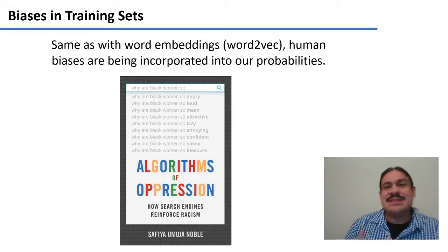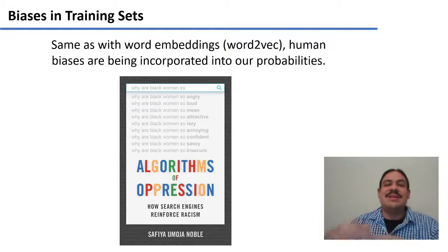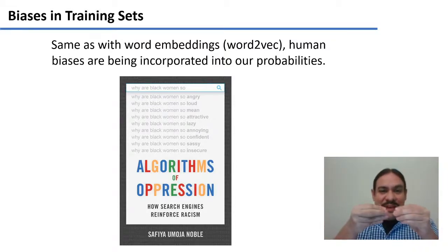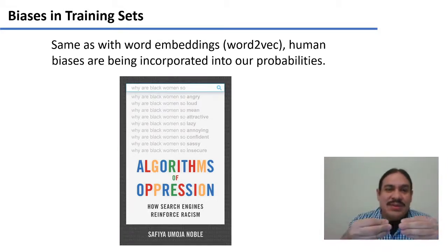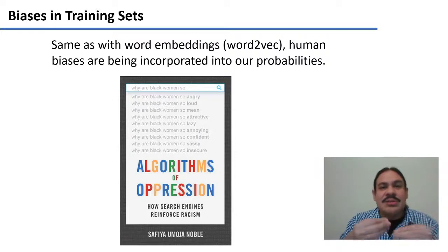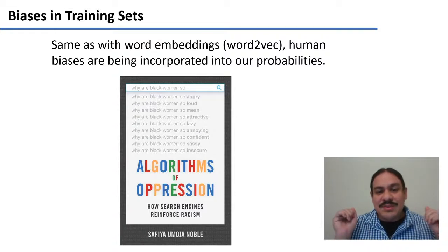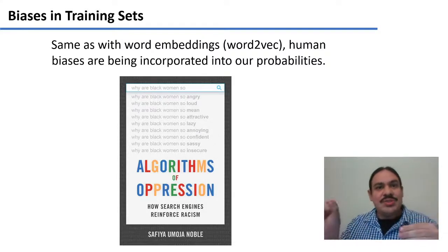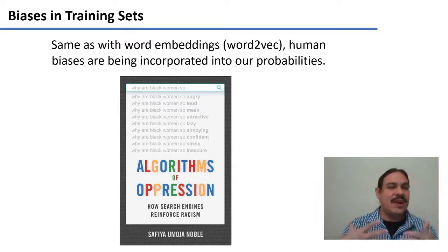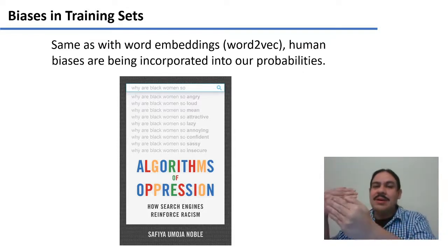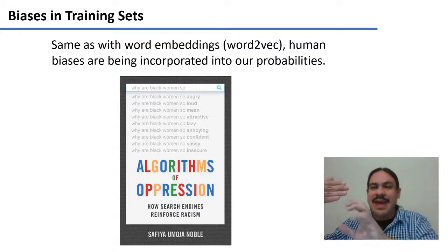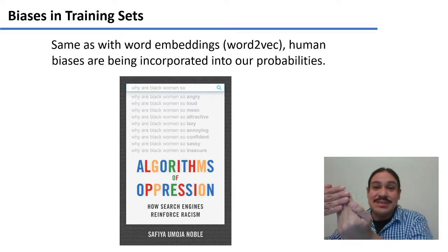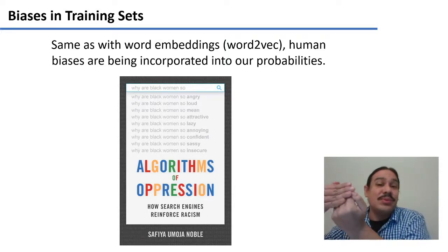A more serious issue — the same as with Word2Vec and every other machine learning model — is that if your bigrams in the input contain some bias, like associating 'black women' with negative properties, then these are the probabilities your n-gram model will incorporate. People have demonstrated the terrible effect of this on search engines and autocomplete, for example. I recommend the book by Safiya Umoja Noble, 'Algorithms of Oppression,' which deals with exactly this problem — the kinds of predictions we get from collocations. We have to be very wary of the input we give our system, how it represents actual language use, and whether it imports the biases of people in the world into the algorithms.